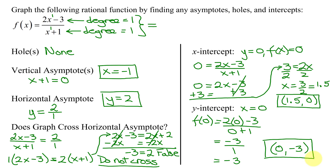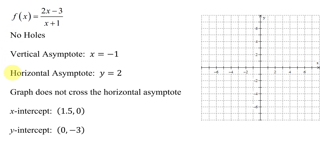Now I'm ready to graph the function. Going to the next slide, I put all the information I found on the previous slide over here. Graphing this information: first, the vertical asymptote x equals negative 1 — here is x equals negative 1, so here's my vertical asymptote. Remember, asymptotes are always graphed with a dotted line. Then I have the horizontal asymptote y equals 2 — here's y equals 2, so here's my horizontal asymptote.